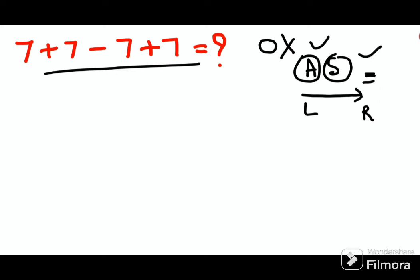So instead, most people would have done 7 plus 7 is 14, minus 7 plus 7 which is 14. So this will get you zero, right? But that's absolutely wrong.